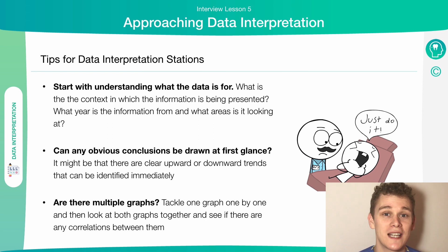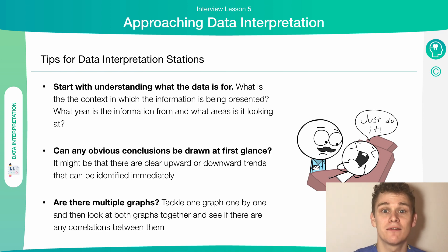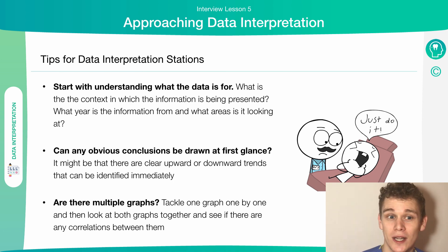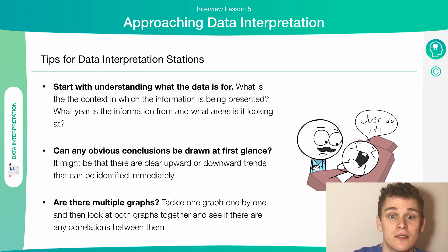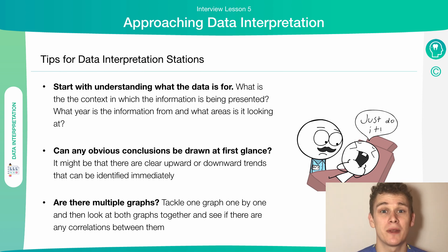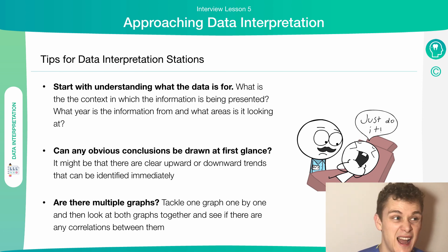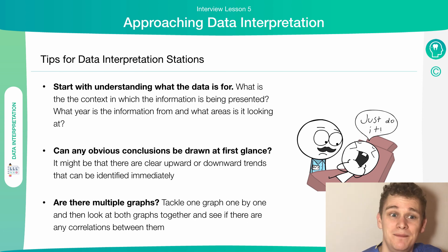Start with understanding what the data is for. What is the context in which the information is being presented? What year is the information from, and what areas is it looking at? Can any obvious conclusions be drawn at first glance? It might be that there's a clear upward or downward trend that can be identified immediately. Generally, it will be something very obvious from the offset — there's not going to be any trick questions.